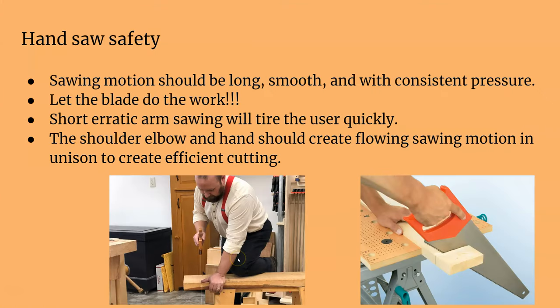The sawing motion should be long and smooth — not short and erratic. You want to use all the teeth of the saw blade going back and forth. The shoulder, elbow, and hand should work together in one fluid motion, like a robot. It shouldn't be all wrist or all shoulder throwing. That covers the types of cuts and how to use the hand saw.